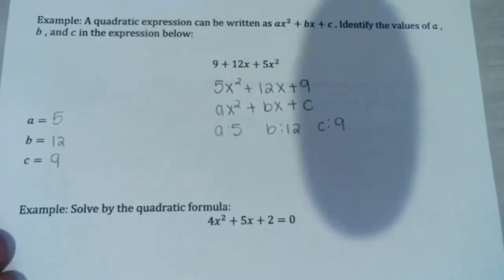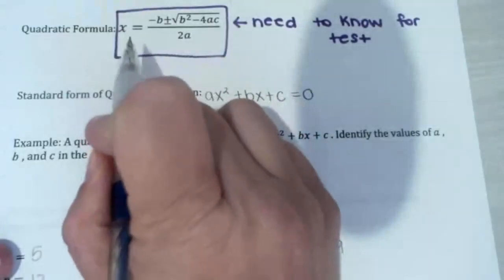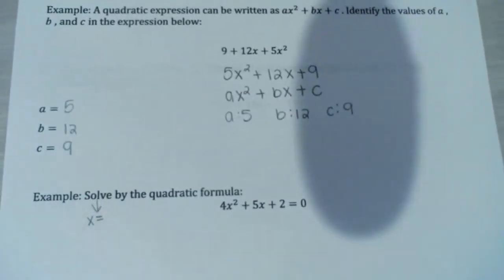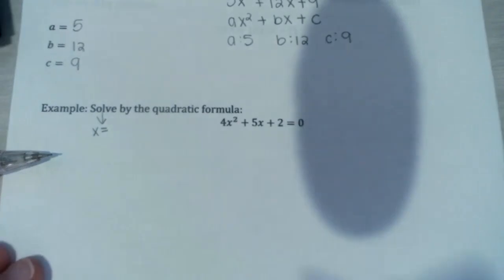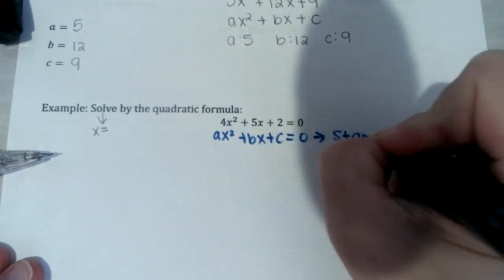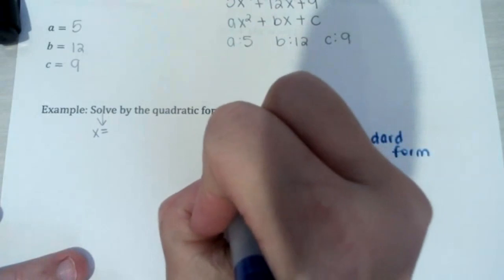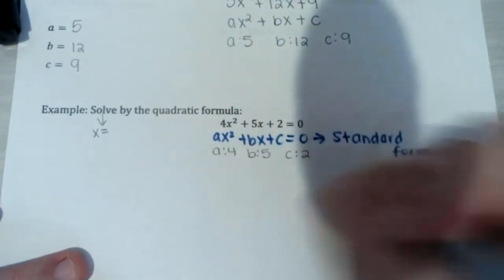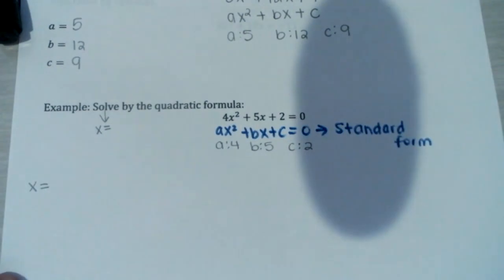The next example says solve by the quadratic formula. Remember, solve means find x equals — the quadratic formula gives you that. We have 4x squared plus 5x plus 2 equals 0, which is already in standard form. So a in front of x squared is positive 4, b in front of x is positive 5, and c by itself is positive 2. I like to rewrite the quadratic formula right next to it, and I say it as I write it to help memorize it.